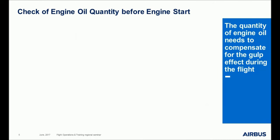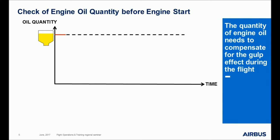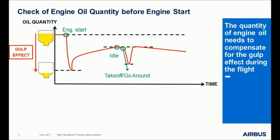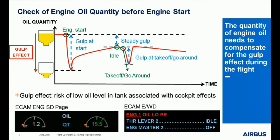The quantity of engine oil also needs to compensate for the gulp effect during the flight. What is the gulp effect? It can be explained through a chart showing the variation of oil quantity over time. As soon as engines are running, oil is drawn down from the tank and the oil level is reduced — this is the gulp effect. There is a transient gulp during engine start, which is quite high. A steady gulp remains when idle is reached, and there is also a transient gulp at takeoff and at go-around.